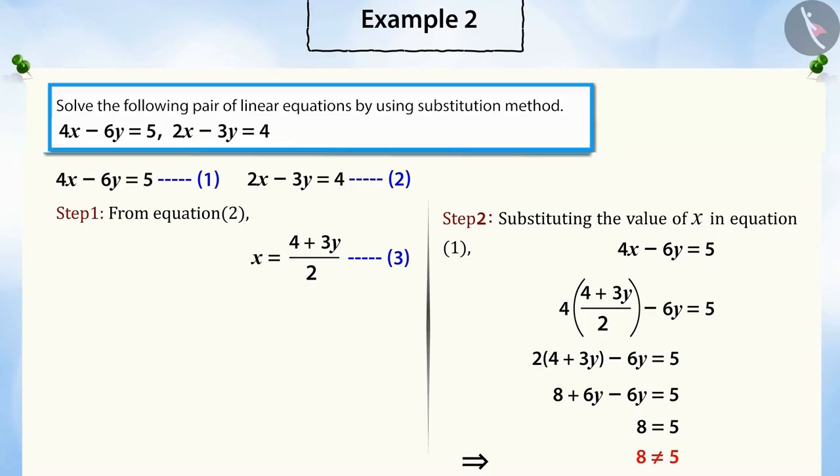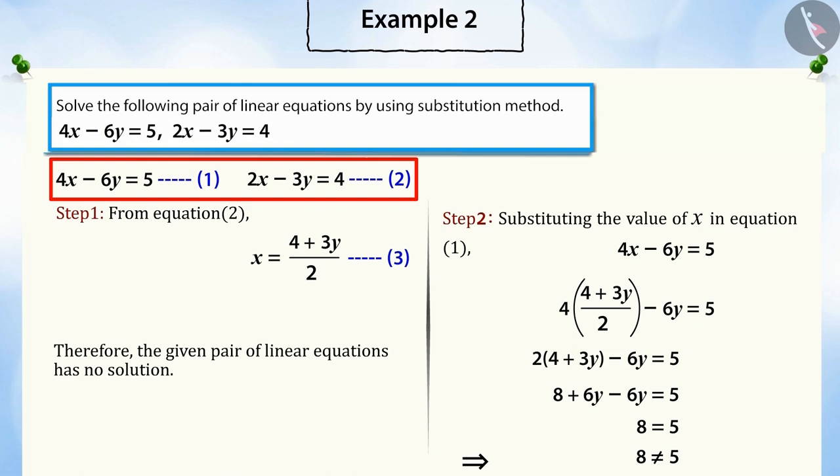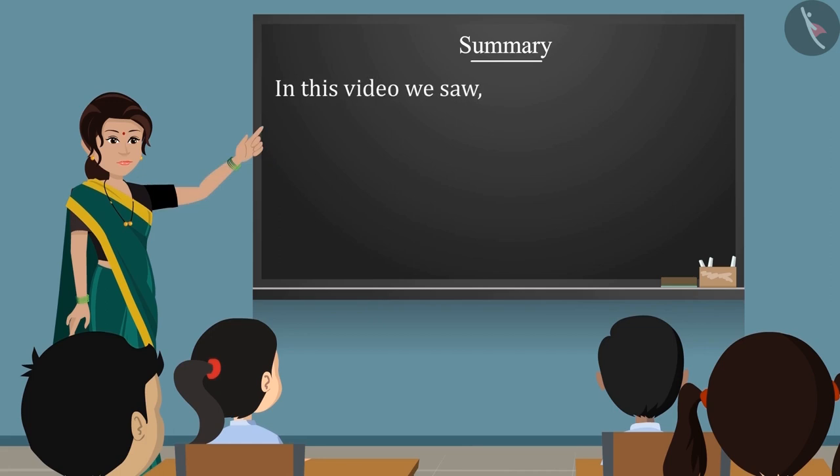Because in this example, we got an incorrect equation without any variable, therefore, the pair of equations do not have any solution.